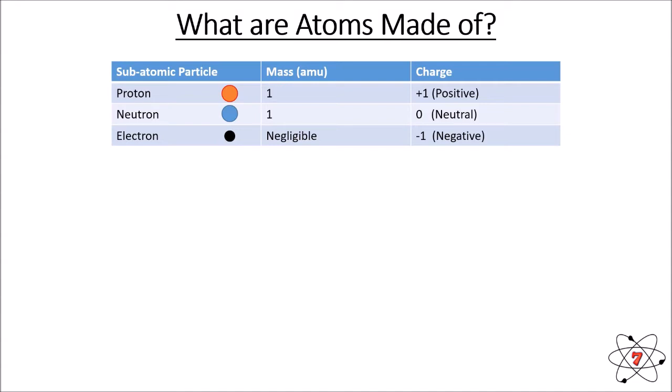Each of these subatomic particles also has an electric charge. A proton has a charge of plus one — it has a positive charge. That's kind of given away in the name: proton, positive. A neutron has no charge — it is neutral, again given away by the name. An electron has a charge of minus one, so it is negative. It's really important that you remember these masses and charges for the three different types of subatomic particle.